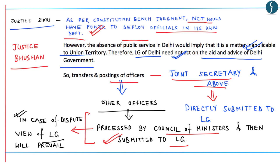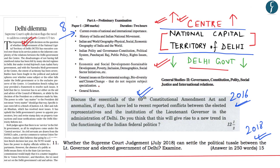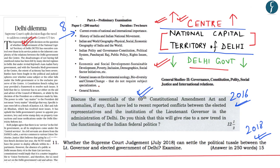According to Justice Bhushan, since there is no service under the national capital territory of Delhi, there is no scope for the Delhi government to exercise any executive power with respect to transfer and posting of officers. Because of the conflicting opinions between Justice Sekri and Justice Bhushan, a larger bench of the Supreme Court will decide on the issue of services. This editorial becomes extremely important as it covers the relationship between the Lieutenant Governor and the Chief Minister, and two UPSC questions in 2016 and 2018 have been asked directly on this issue.